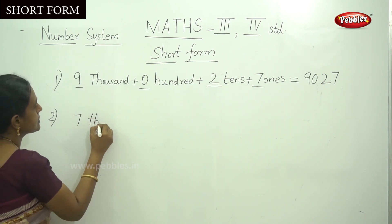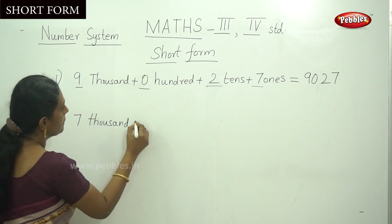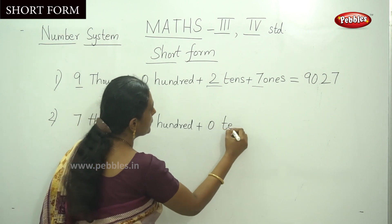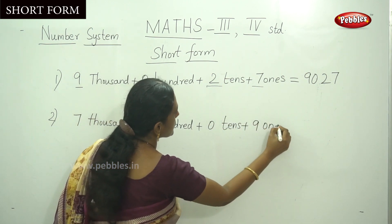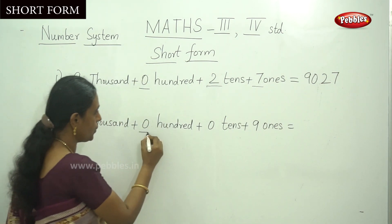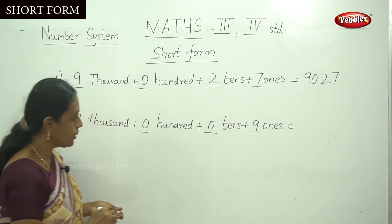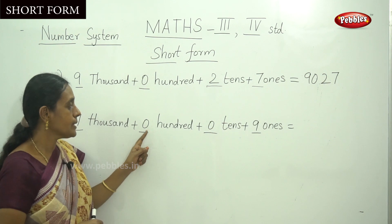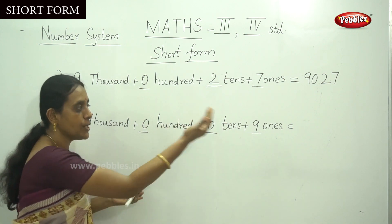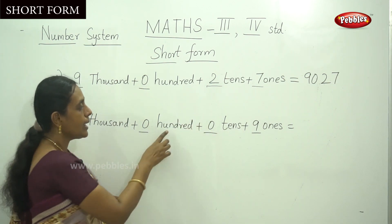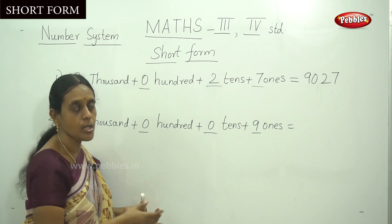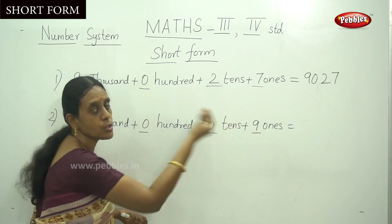Another example: seven thousand plus zero hundred, plus zero tens, plus nine ones. How to write, children? Simply you have to underline these numbers. That is zero, zero, and nine. One more thing to understand — while it is a place value, if any value is zero, you have to simply write down this zero in the answer. Because hundred place has no number and tens place also zero, no number at all.